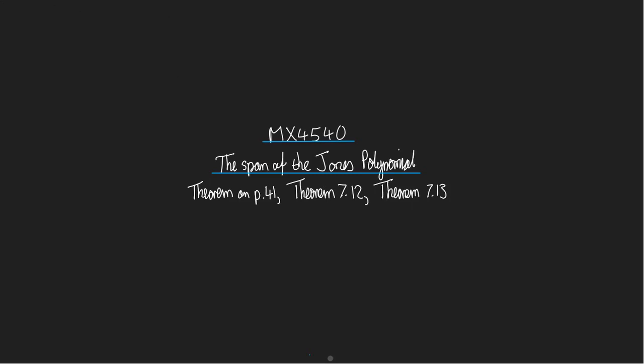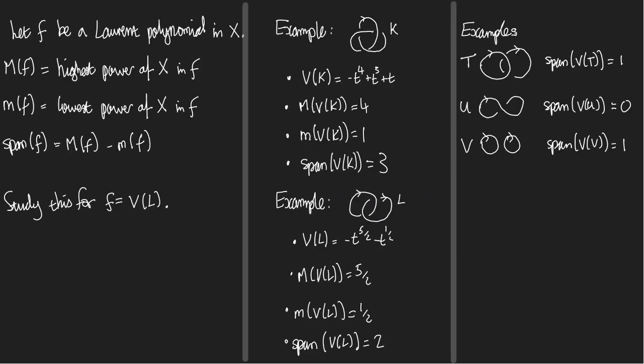Hello and welcome to a mini lecture about the span of the Jones polynomial. So this is the big theorem, the big theorems, from section 7 of the notes and these are brand new applications of the Jones polynomial that weren't known until the 1980s. So it's quite exciting and we can prove them. Today I'm going to tell you the statements and explain what they say. This is about the theorem you can read on page 41, or more properly theorems 7.12 and 7.13 from later on which together imply the theorem on page 41.